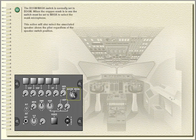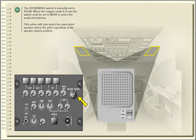The boom/mask switch is normally set to boom. When the oxygen mask is in use, the switch must be set to mask to select the mask microphone. This action will also select the associated speaker above the pilot regardless of the speaker switch position.